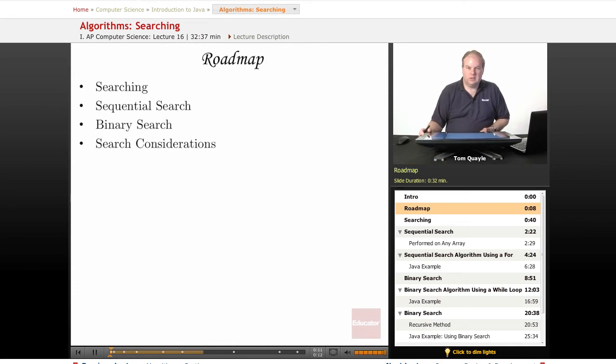We'll first talk about searching and some general considerations about searching and how we implement searching. Then we'll look at two specific methods of searching. One is known as sequential search and one is known as binary search. We'll talk about the pros and cons of each, and then finally we'll conclude with some specific tradeoffs and considerations to take into account when you're considering implementing a search algorithm.